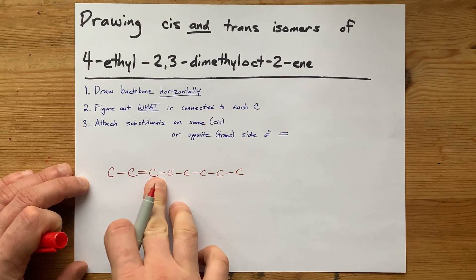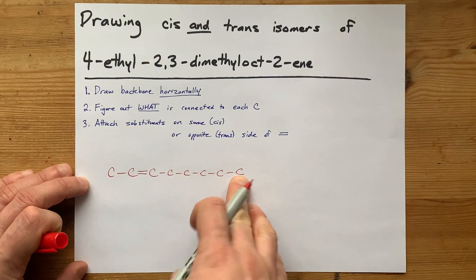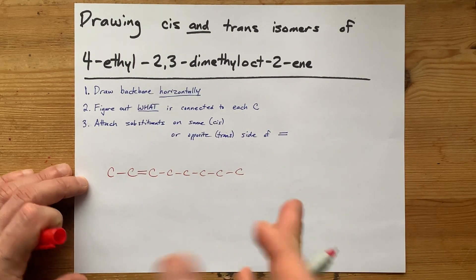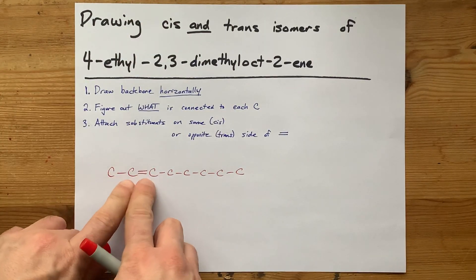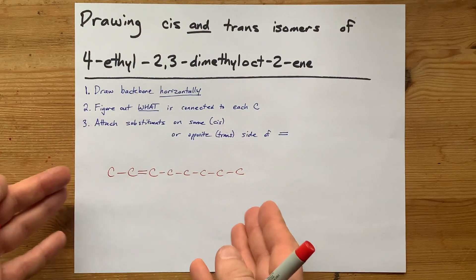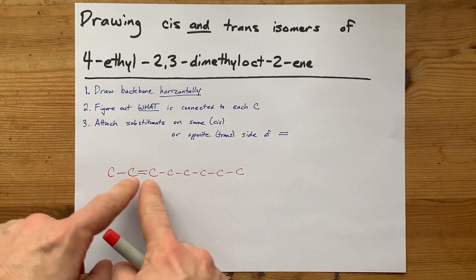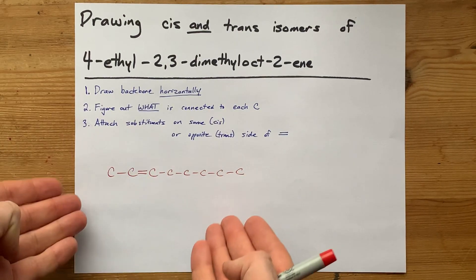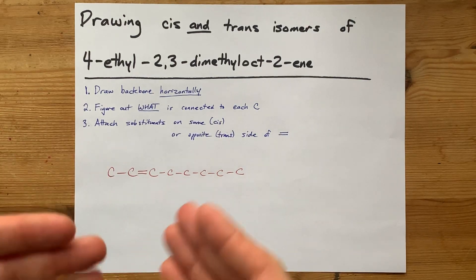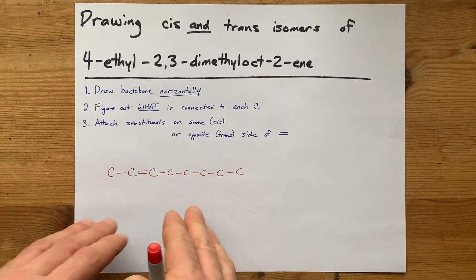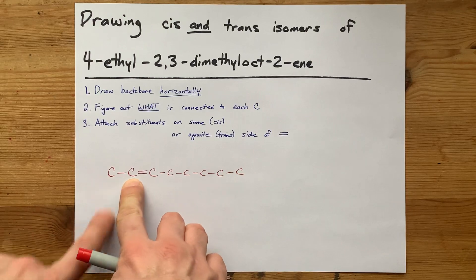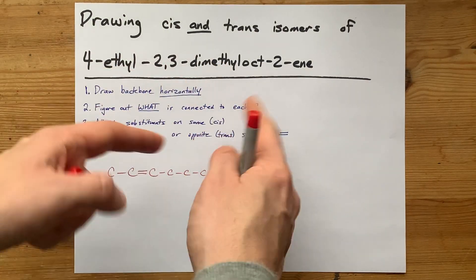Now, all the bonds when a carbon is single bonded are 109.5 degrees in three dimensions, and around a double bond, they're actually 120 degrees. So the molecule's never perfectly horizontal like this, but we're doing this as a visual aid. Here's the backbone. Here's carbon two. Now I can attach all the other stuff.